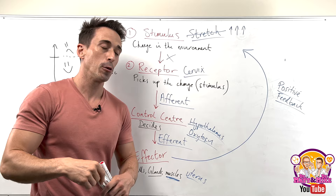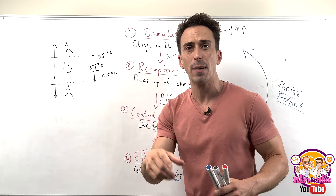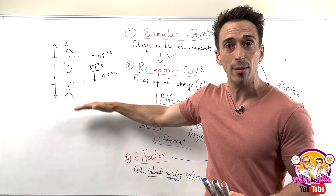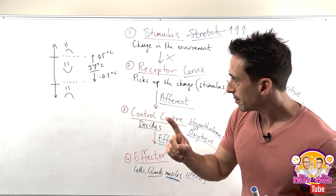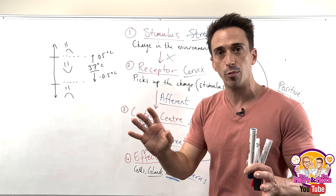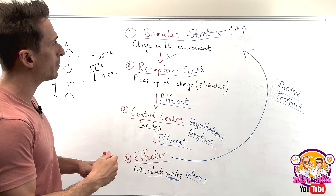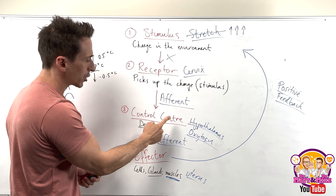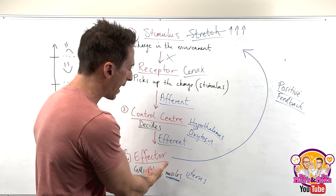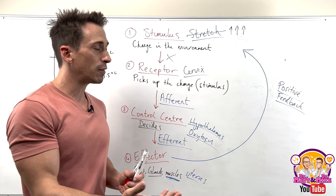So what have we learned? Homeostasis is the body trying to maintain internal balance and stability — not going outside the upper and lower limits, but sitting within a range that differs for all functions. If it goes too high or too low, the body responds to bring it back into its appropriate range. The six components are: the stimulus, the receptor, the afferent signal, the control center, the efferent signal, and the effector. In negative feedback, the effector negates or does the opposite of the stimulus. In positive feedback, the outcome exacerbates or amplifies the stimulus.